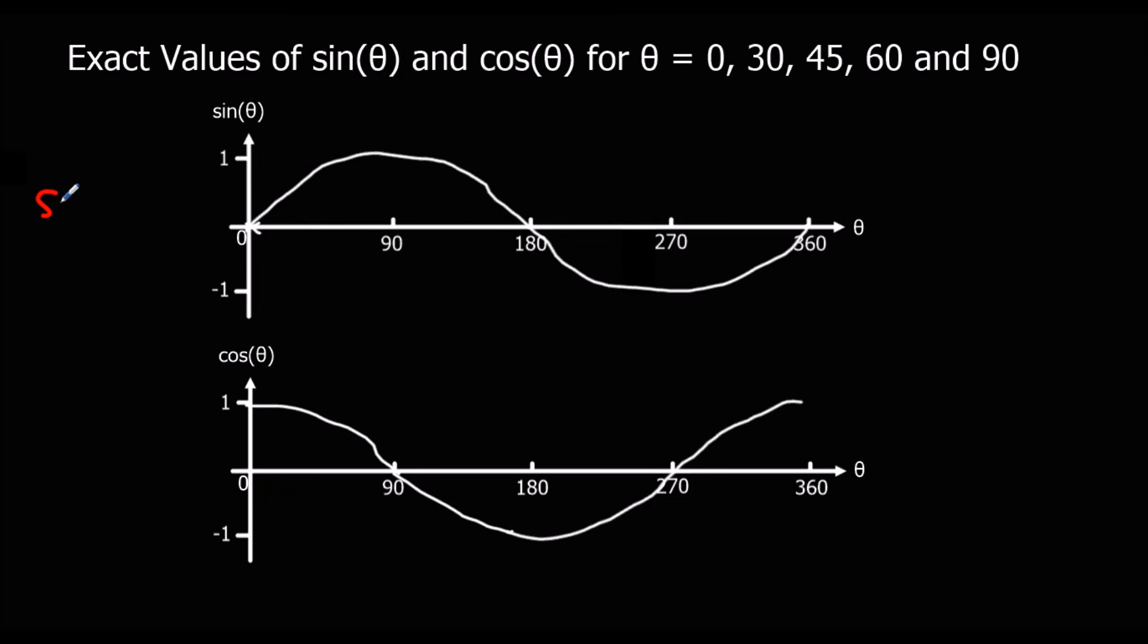So at 0, sin of 0 degrees, sin of 0 equals 0, and cos 0 equals 1. And at 90, we've got sin 90 is at 1, and cos 90 is at 0.